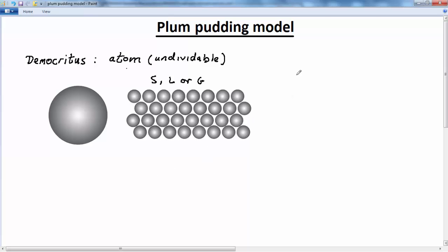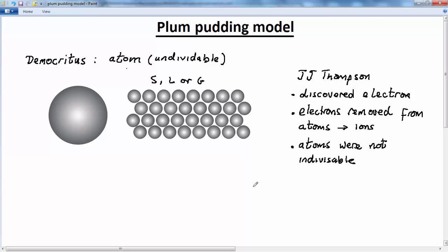J.J. Thomson discovered the electron. But what is more, he discovered that electrons could be removed from atoms to form ions, and that meant one simple thing: that the atom was no longer undividable. That's to say, the atom itself was made up of smaller particles, one of which was the electron. So the atom was no longer the building block of matter, but there were smaller particles from which matter was constructed.